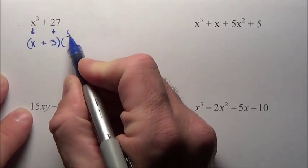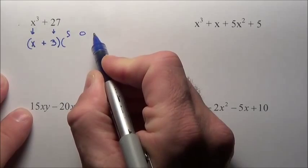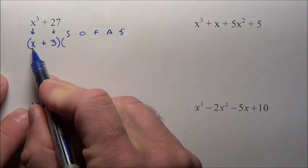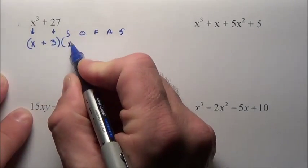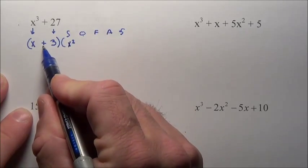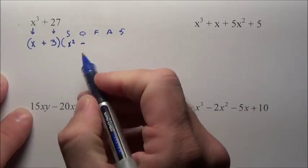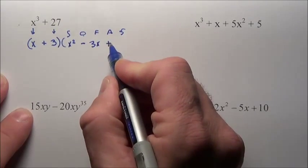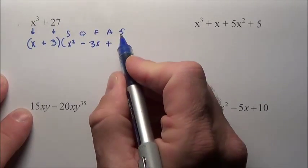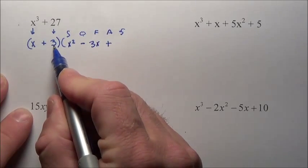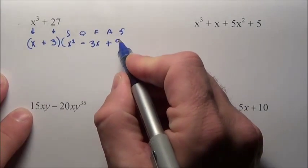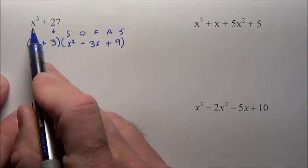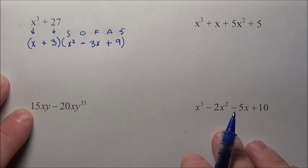Now is when I do the SOFAS part. S, O, F, A, S. The S stands for squaring this first piece — x times x is x squared. O is opposite symbols — since this is a plus, I must use a subtraction sign. F is fuse these together, that's going to be 3x. A stands for always add. And the final S stands for square this final piece — 3 times 3 is 9. So this binomial times this trinomial is the factoring of x cubed plus 27.